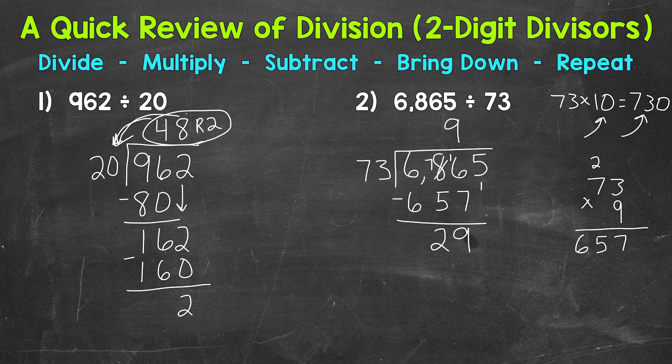After subtracting, we bring down. So let's bring down the 5. And we have 295. After we bring down that 5, we repeat. So we go back to divide. So we have 295 divided by 73. We need to figure out how many whole groups of 73 are in 295. So let's use 9 groups of 73 as a reference point. 9 groups of 73, or 73 times 9, gave us 657. 295 is about half of that. So we need to scale that back. Let's try 73 times 5 and see how close we get. And then we can make adjustments if need be.